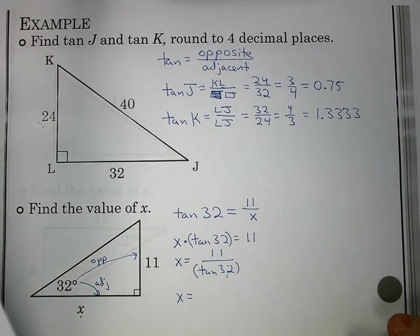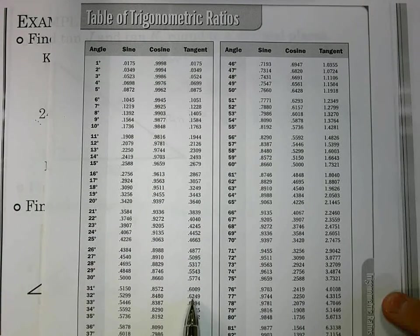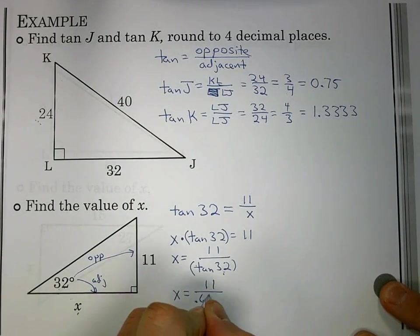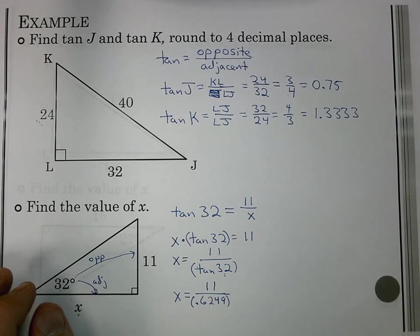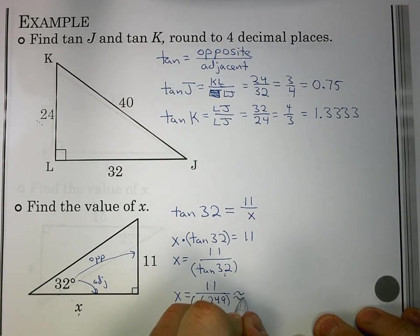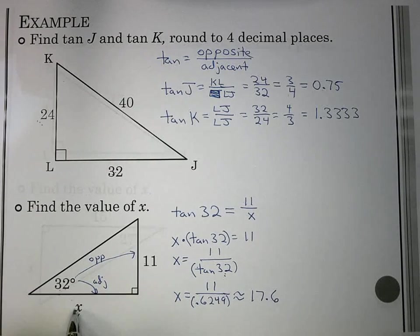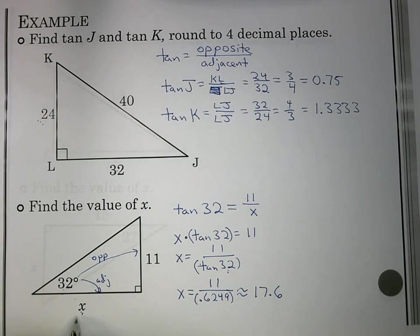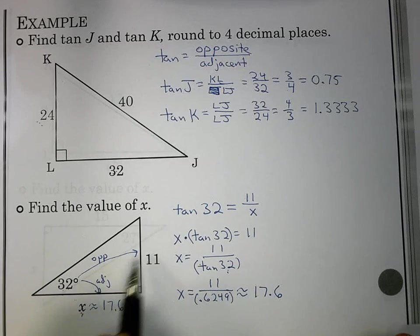Now we have to simplify. Tangent of 32, if we look on our chart, tangent was the furthest column over. Tangent of 32 is 0.6249. That's the value we're going to use for tangent of 32. Take our calculator. We're going to do 11 divided by 0.6249. It comes out to be about 17.6 units. That is the length of this side. We found that because we had the ratio of 32 between those two sides.